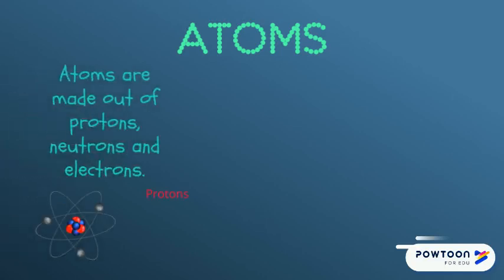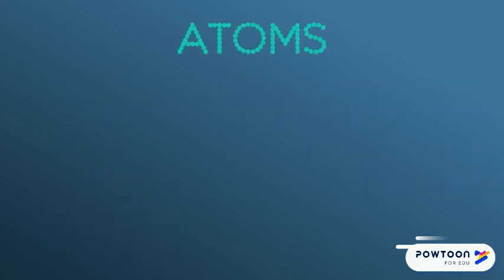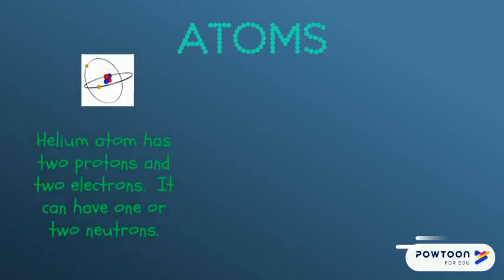Atoms are made out of things called protons, neutrons and electrons. Different atoms have a different number of protons, neutrons and electrons. Let's take a closer look at a couple of atoms. The helium atom has two protons and two electrons, and it can have one or two neutrons.